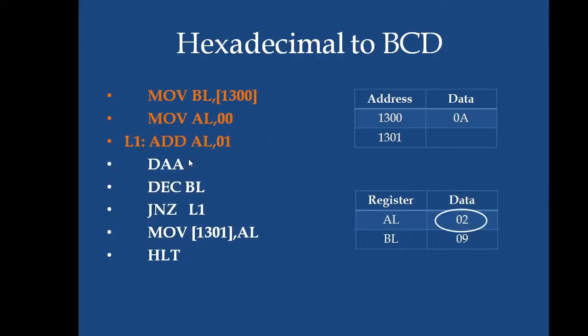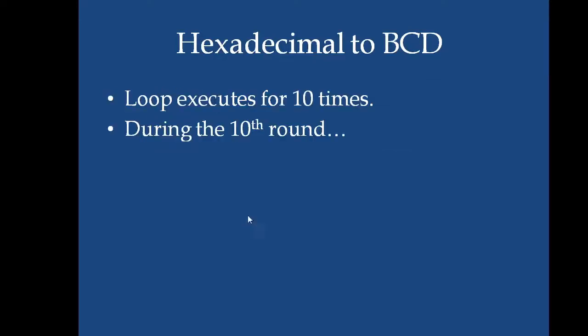Now, in the next instruction, AL will be added with 02. This set of instructions will be repeated again and again until this BL becomes 0. During the last round, this will be continued for 10 times because the hexadecimal value given is 0A, hexadecimal equivalent is 10.